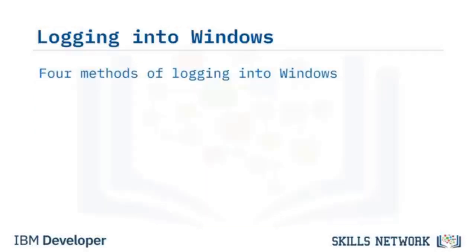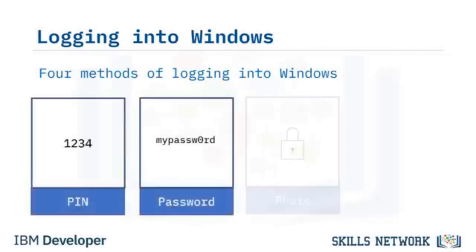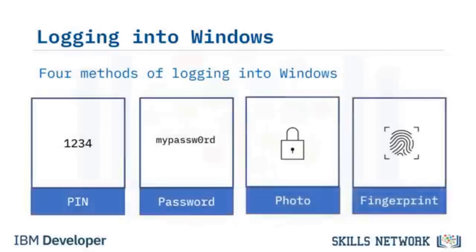Microsoft Windows 10 provides four easy methods to log into a machine. You can log in using a PIN, a password, by drawing over a photo that you previously set up, or by scanning the fingerprint that you previously paired with the computer.